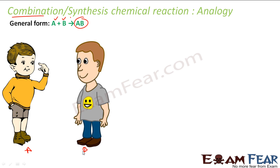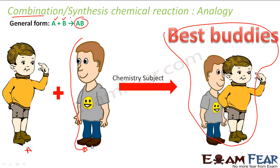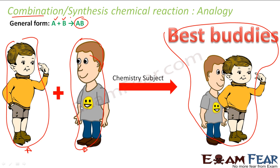The analogy is: there are two guys, A and B. They both like chemistry, so they become best buddies. There were two students A and B who became one identity — they became best buddies. So there was one compound A, one compound B, and because of the chemistry subject they became best buddies. Two things became one thing — that is the example of synthesis or combination reaction. Sometimes you need an external factor, like the chemistry subject that made these guys best buddies; sometimes that is not even required.